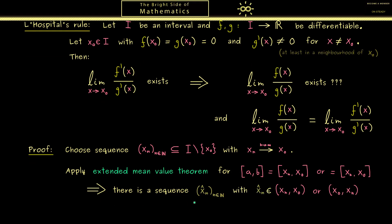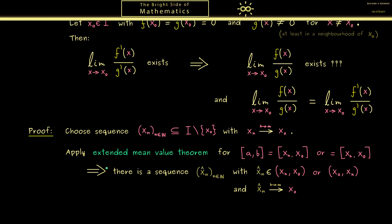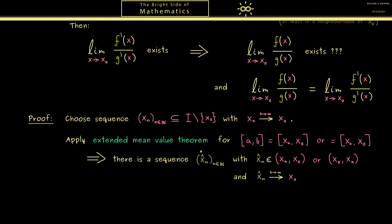Ok, now we know every point in the sequence (x̂ₙ) lies between xₙ and x₀. However, since we have the limit xₙ to x₀, we know this interval here gets as small as we want. In other words, there is no other possibility than that x̂ₙ also converges to x₀. Ok, so this is very neat, but you see there is still one important part of the extended mean value theorem missing here.